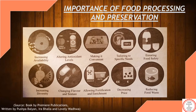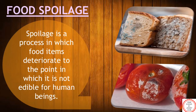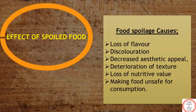While talking about food processing and preservation, it is also important to pay attention to food spoilage. Food spoilage is a process in which food items deteriorate to the point where they are not edible for human beings. Think about what kind of impact spoiled food will leave on your health. The spoiled food will have loss of flavor, discoloration, not at all appealing, deterioration of texture, loss of nutritive value, and it makes food unsafe for consumption.